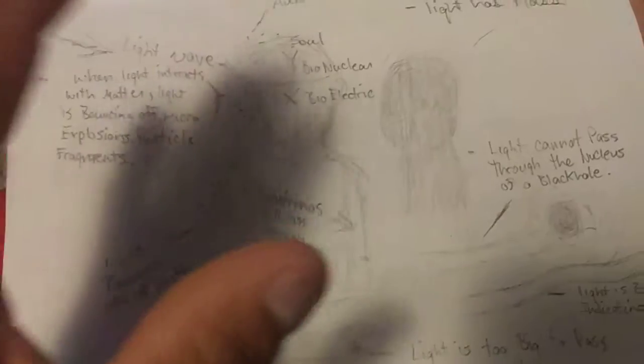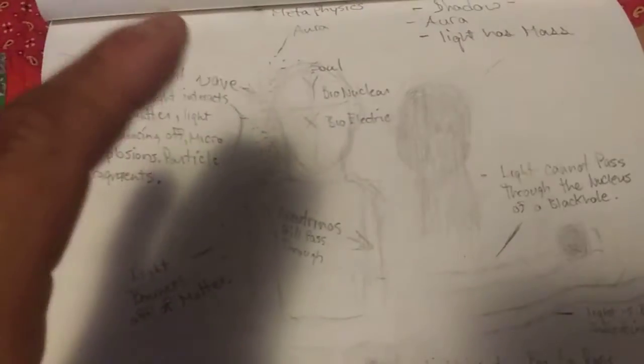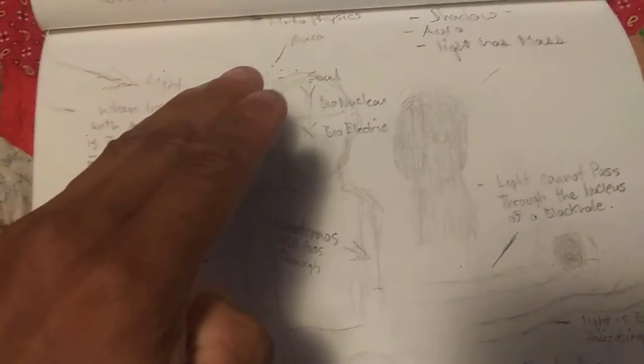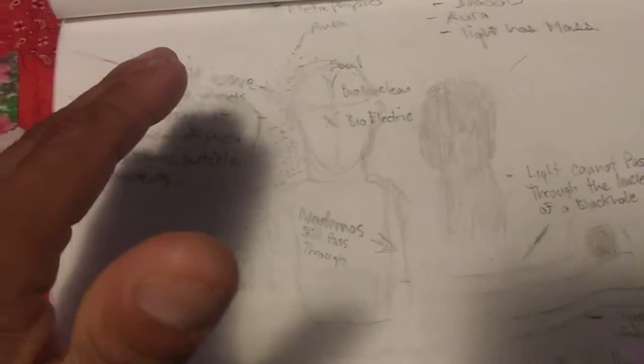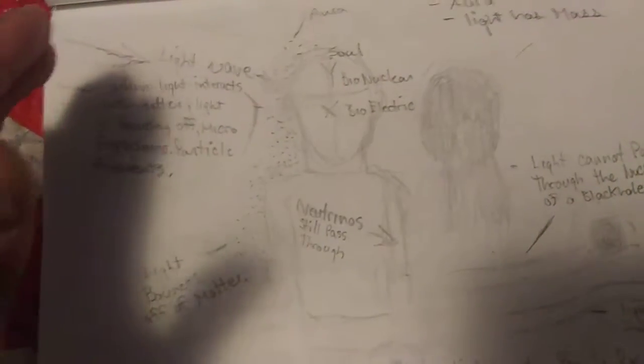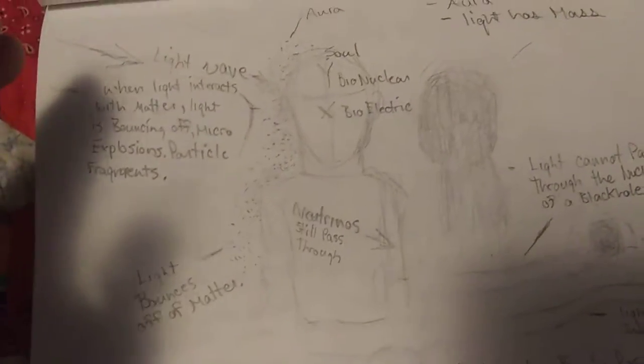Like, do you see my shadow on that? If light did not have any mass at all, it would not even interact with the mass in my hand. That is common sense. I mean, that is literally common sense. So literally, light does have mass. That's a misconception.